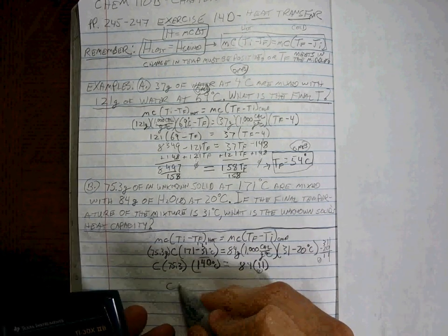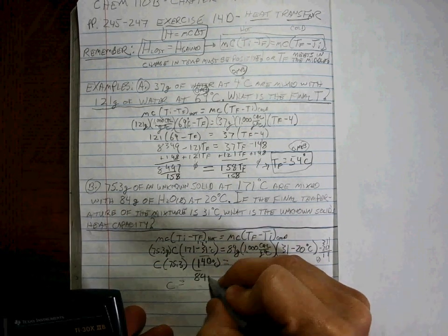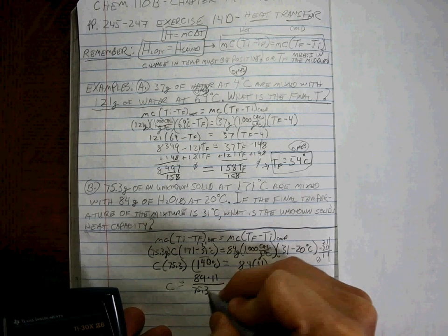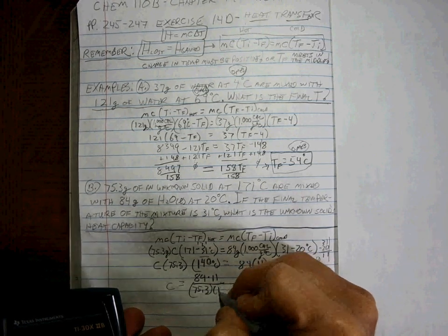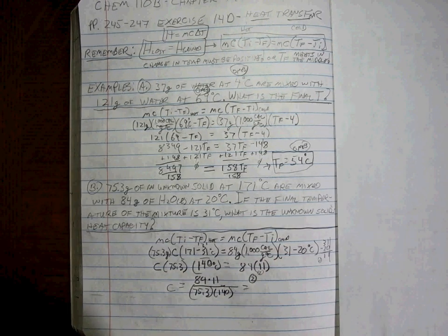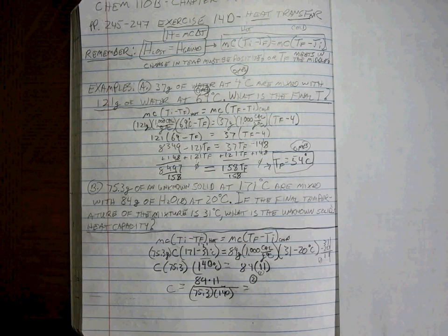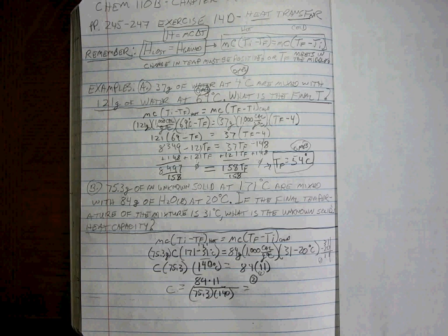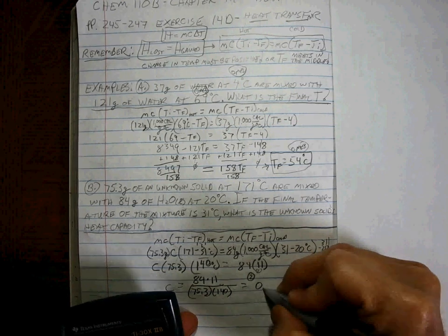So C is equal to 84 times 11 divided by 75.3 divided by 140. And to two sig figs, I get 0.088.